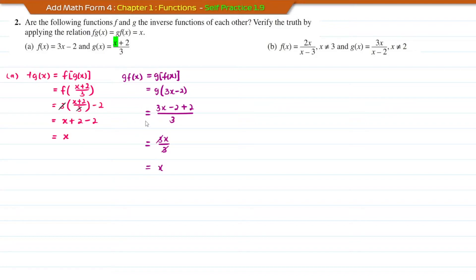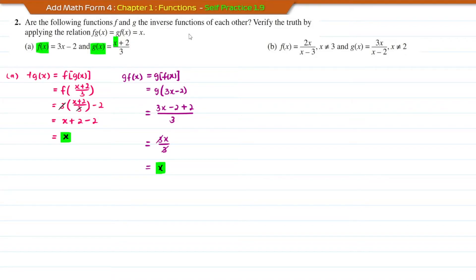The composite function GF equals x and FG also equals x. Therefore, function F and function G are inverse functions of each other.